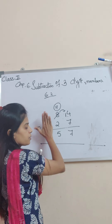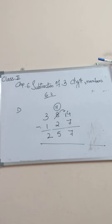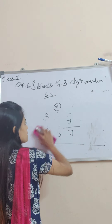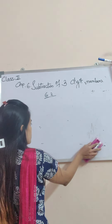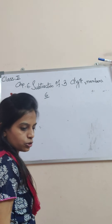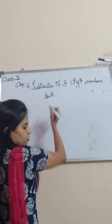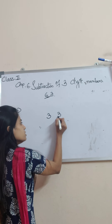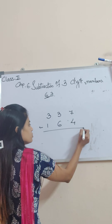Aapne tens ki place tak borrowing to abhi keeti, abhi just hundreds ki place. Ab mein aapko bataunga hundreds ki place se aur tens ki place se borrow kaise karna hai. Now, moving to Exercise 6.3. I am going to show you the sums as I give you in the schedule — you have to write. The first one is 337 minus 164.